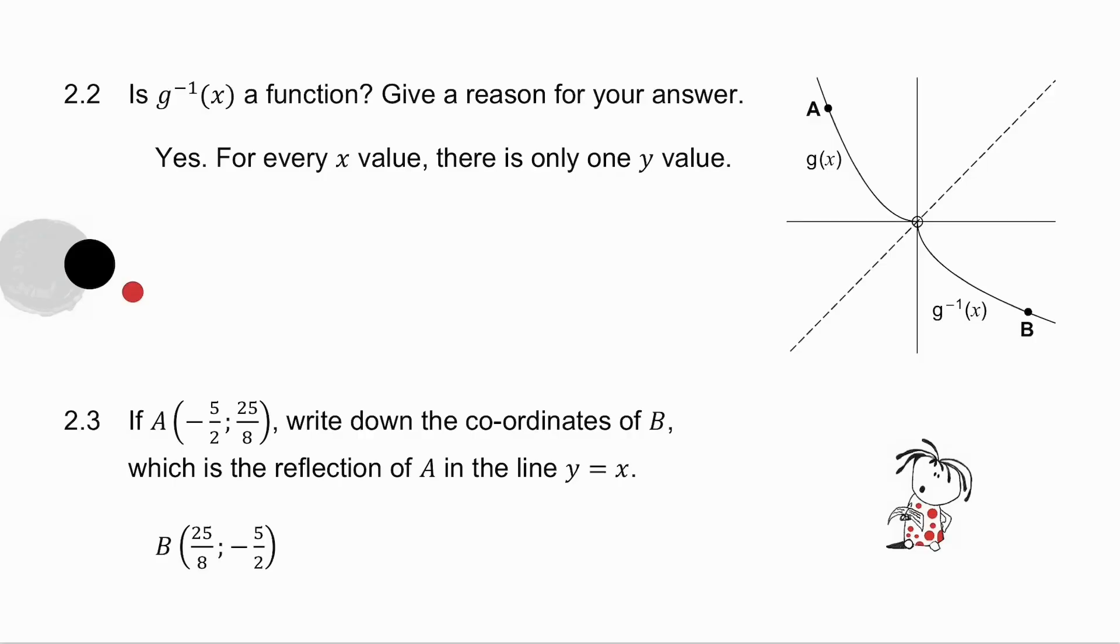Is the inverse a function? Yes, it is. There's my inverse. For every x value, there is only one y value. And then the last question. I've given you the coordinates of A. Now, you will notice that A and B are reflections. So how do you get the coordinates of B? You simply swap the x and the y values.